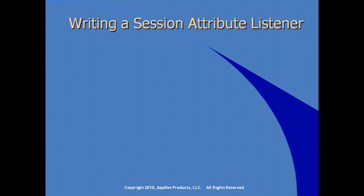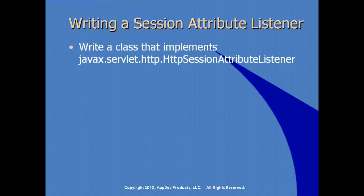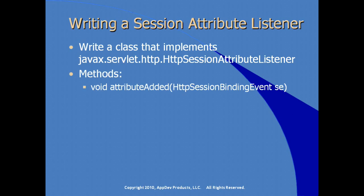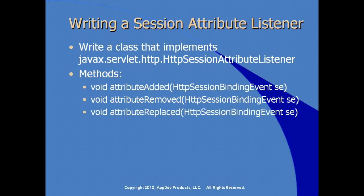To write a session attribute listener — to take action as attributes are added or removed from the current HTTP session — we write a Java class that implements HTTPSessionAttributeListener. The key methods are attributeAdded, attributeRemoved, and attributeReplaced. Each method receives an HTTP session binding event, which has handy methods to get the session, getName to get the name of the attribute that changed, and getValue to retrieve the value of the attribute being added, replaced, or removed.